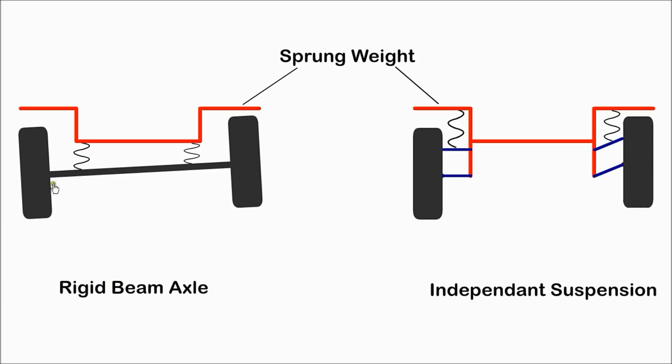With an independent suspension, each wheel is connected by its own linkage and its movement does not affect the other wheel. An independent suspension has less unsprung weight and allows the wheels to move independently of each other.